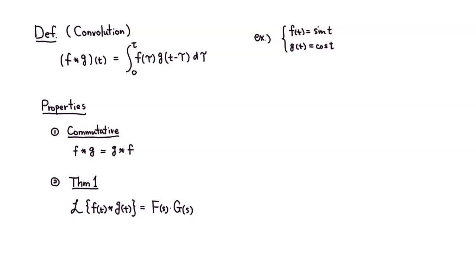Let's look at the definition of convolution. Convolution is a kind of weird multiplication that works well with the Laplace transform. Convolution f star g of t is defined to be the integral from 0 to t of f of tau times g of t minus tau with respect to tau.